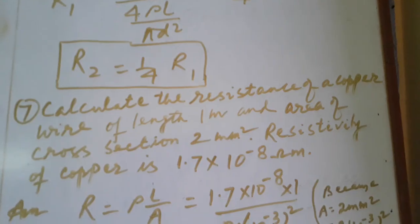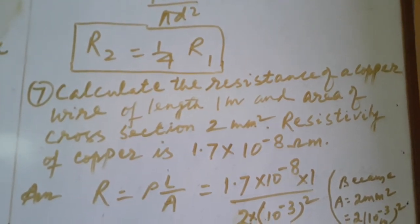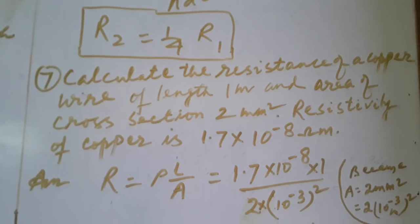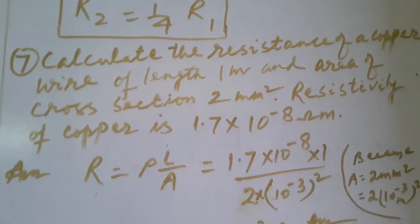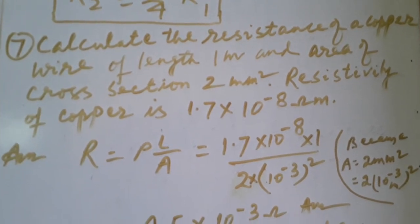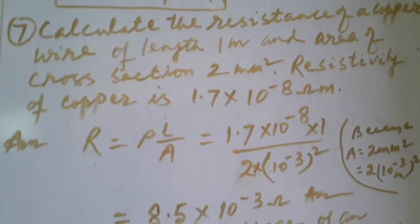Now question number 7: calculate the resistance of a copper wire of length 1 meter and area of cross section 2 millimeter square. Resistivity of copper is 1.7 into 10 power minus 8 ohm meter.